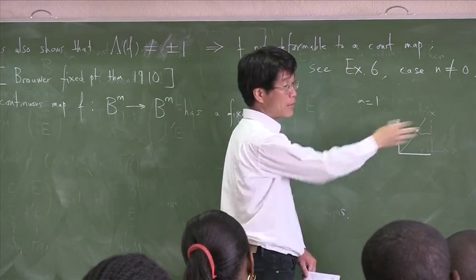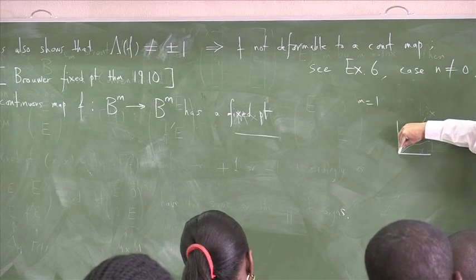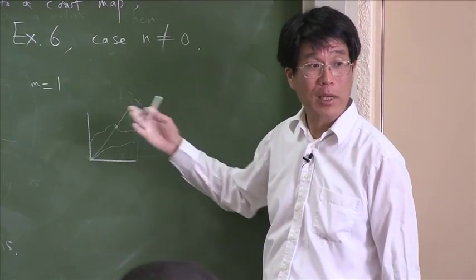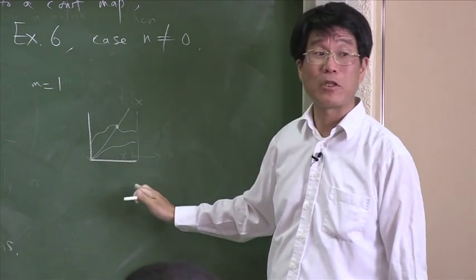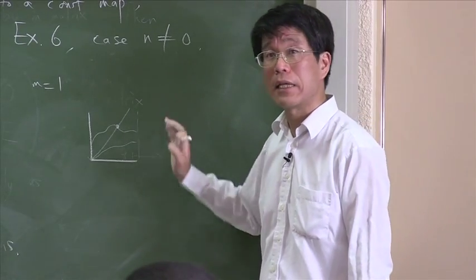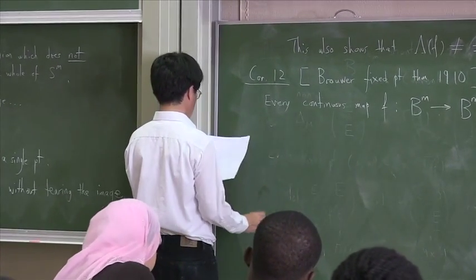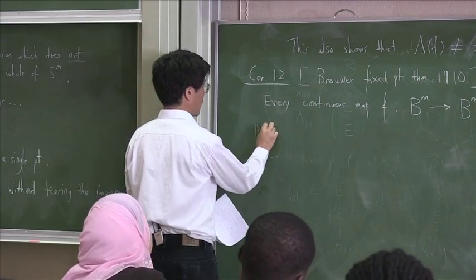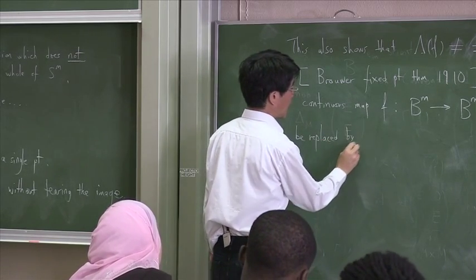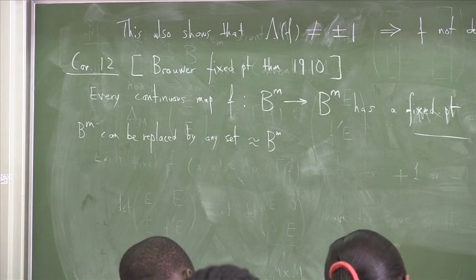You might say, what if I start from here and then go there, I don't seem to have crossed the diagonal. No, you are at the diagonal at the origin. So it's important to include both endpoints. It's important that B^m was defined to be a closed ball. B^m can be replaced by any set homeomorphic to the ball.